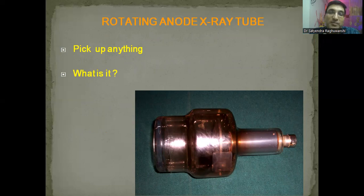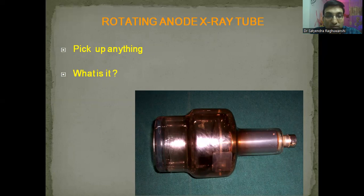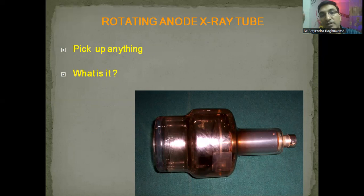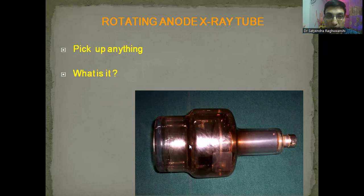Now, this is the most important table viva item — the x-ray tube. A candidate tends to pick up the large bulky glass envelope. Will you pick it up during examinations? It is made of pyrex glass and can slip from your hands and fall — this can be catastrophic. So never, never try to pick up the x-ray tube. You know it is an x-ray tube, so you don't need to pick it up. See it from there.